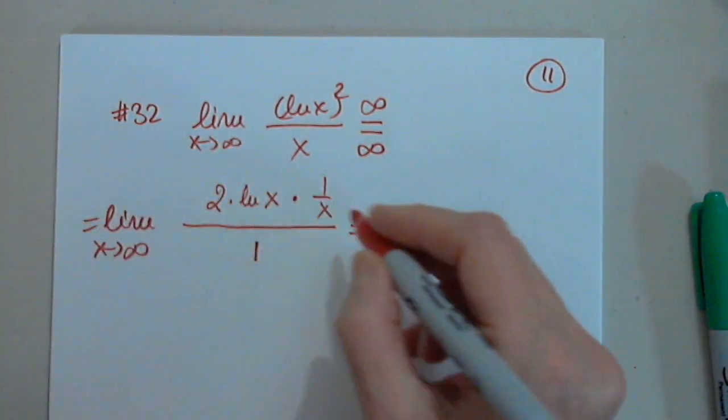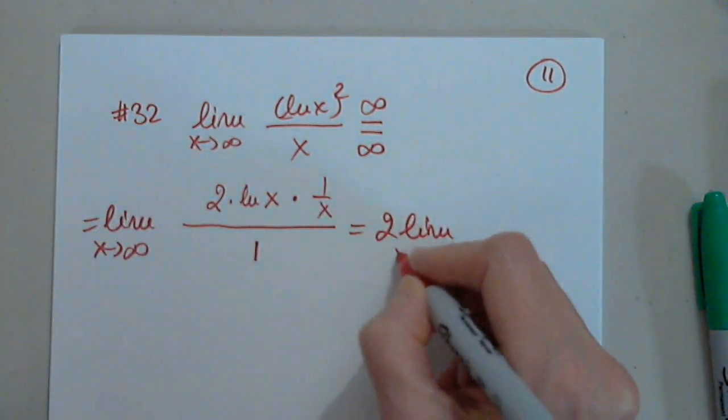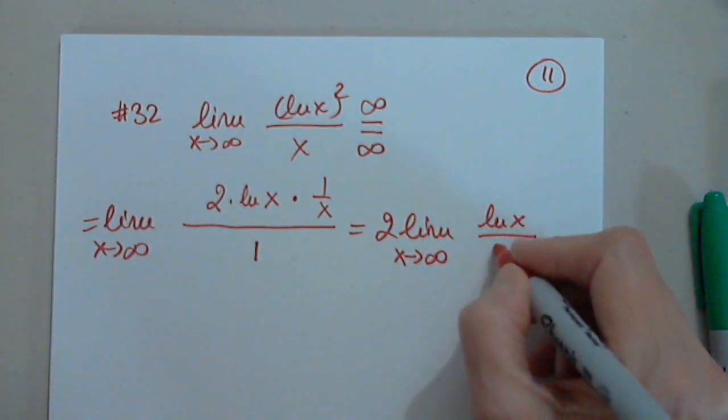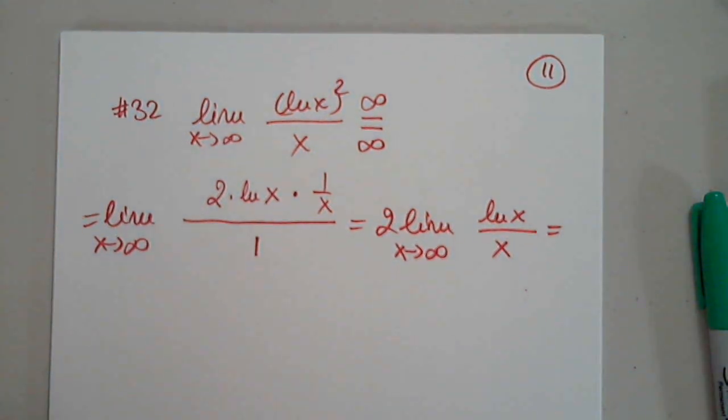So then we have 2 outside because it's a factor. 2 limit as x approaches infinity of natural log x over x. Where does the top go?